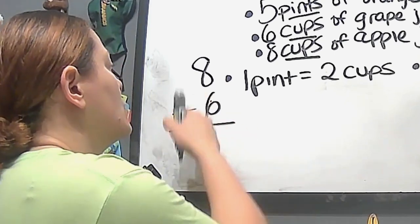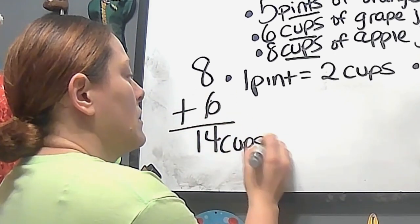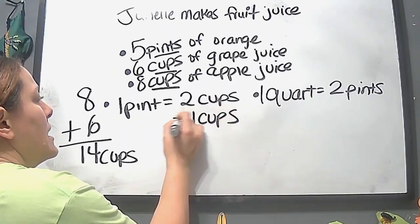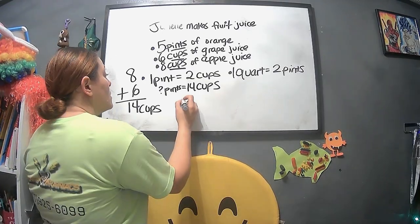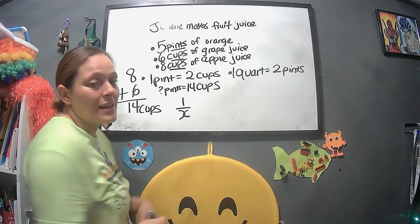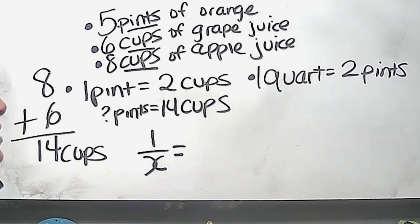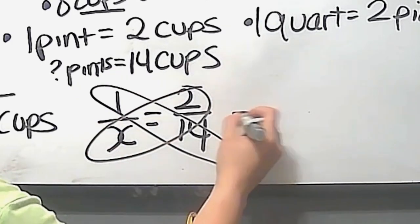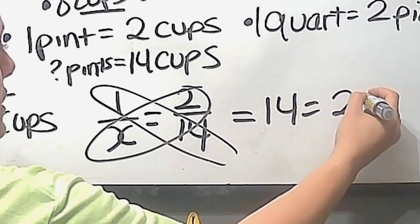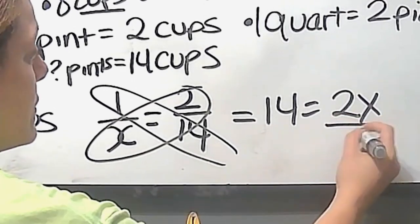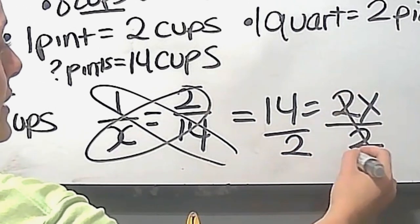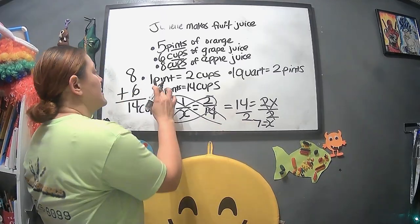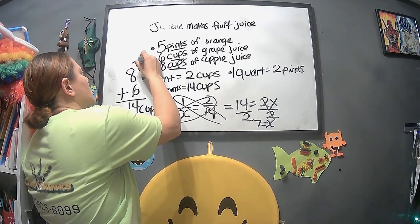1 pint equals 2 cups and 1 quart equals 2 pints. That's the first step. The second step, we will do 8 plus 6 that would be 14 cups. Which equation will we use? Well, this one has the cups. So we would have 14 cups here equals, we don't know how many pints. You can do this by cross-multiplying by doing 1 pint over X, because X is the unknown number, equals 2 over 14. Right?